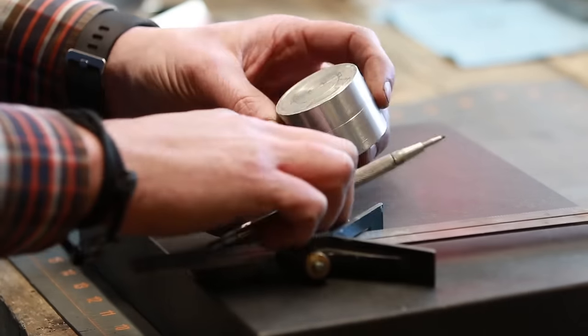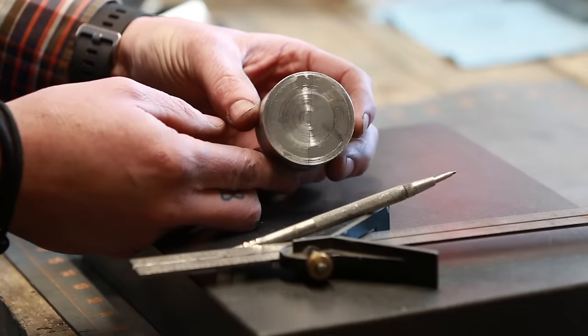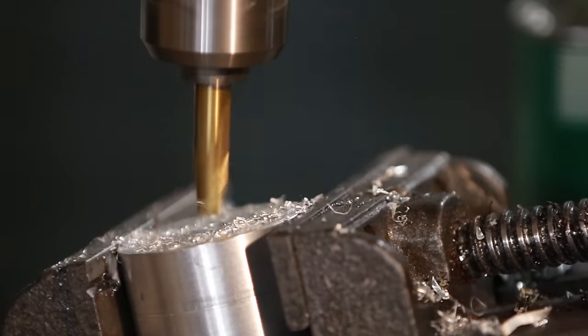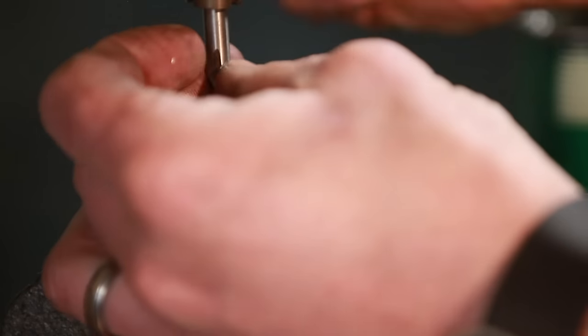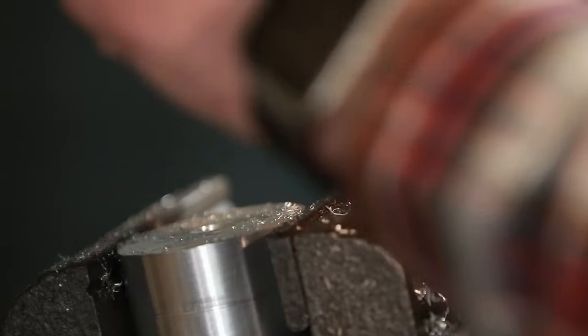Then I use my center finder here just to roughly mark out that straight line on the top, and I'm just going to use that for reference when I clamp that into the milling machine and again machine a nice flat surface.